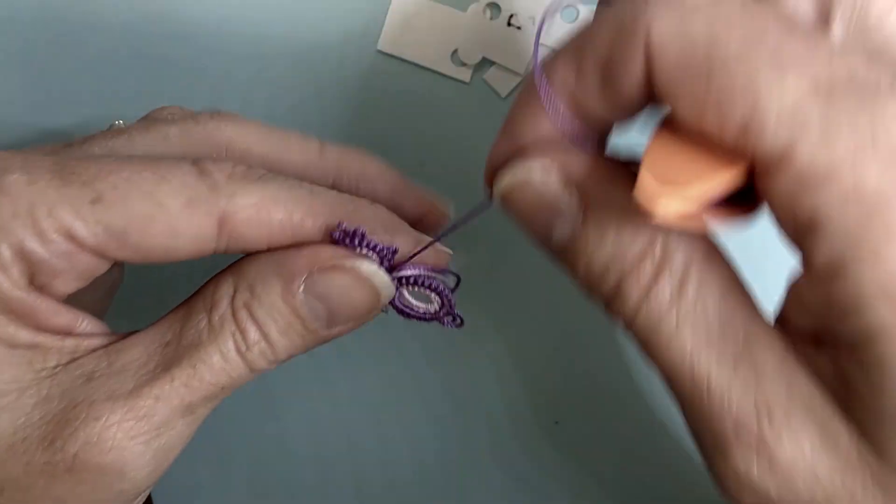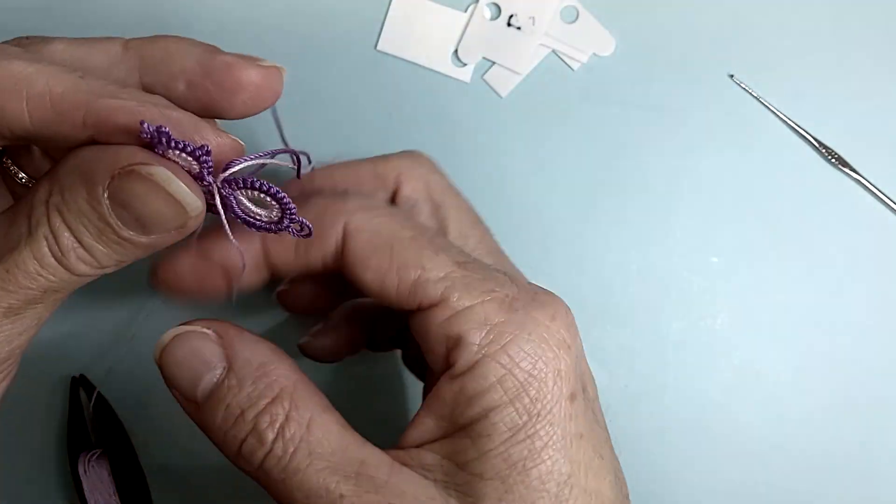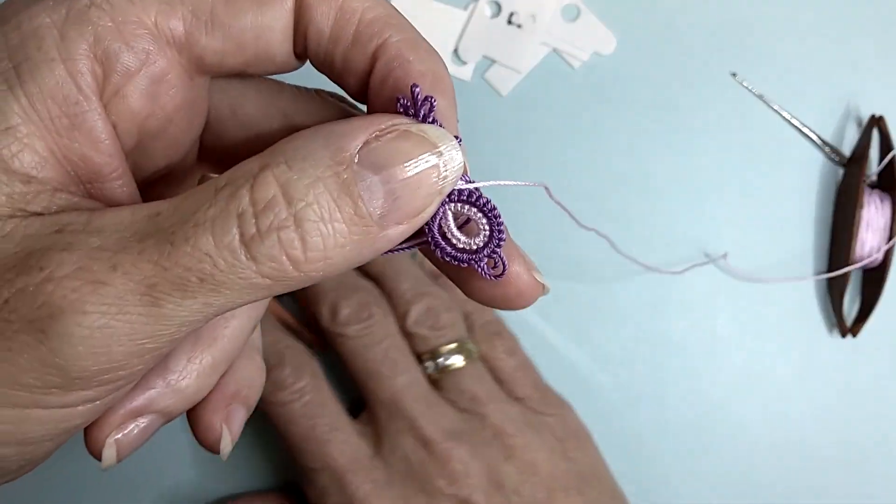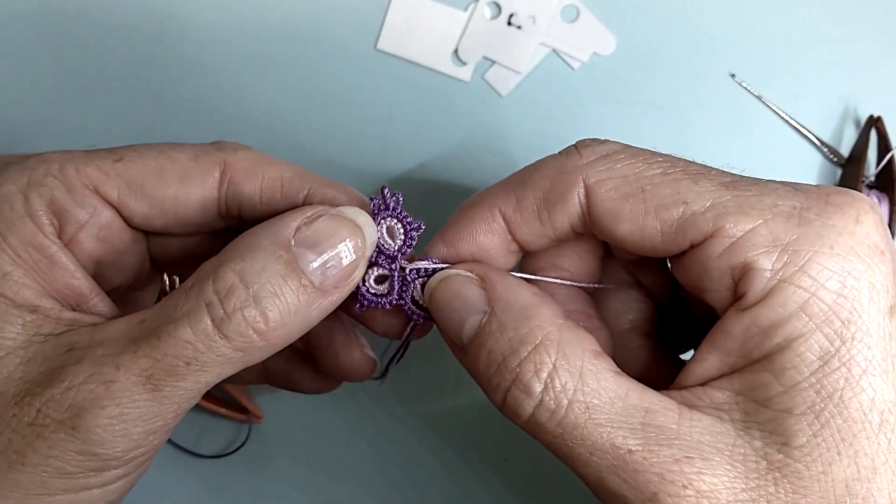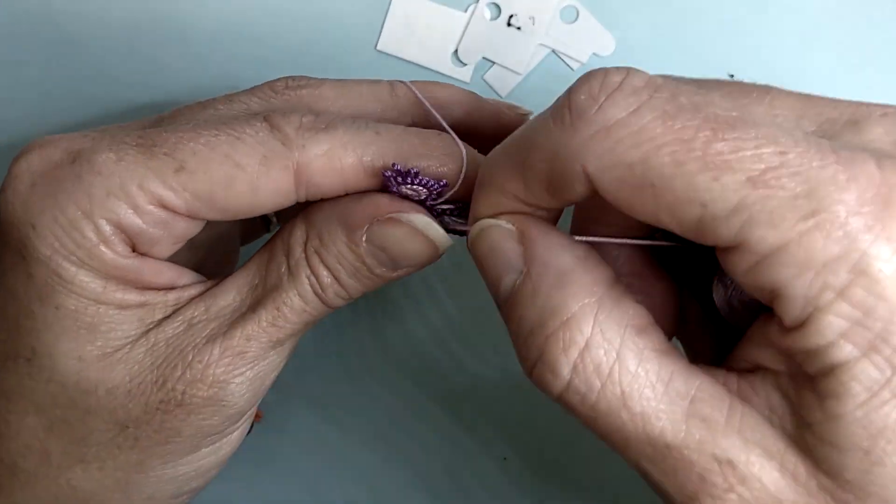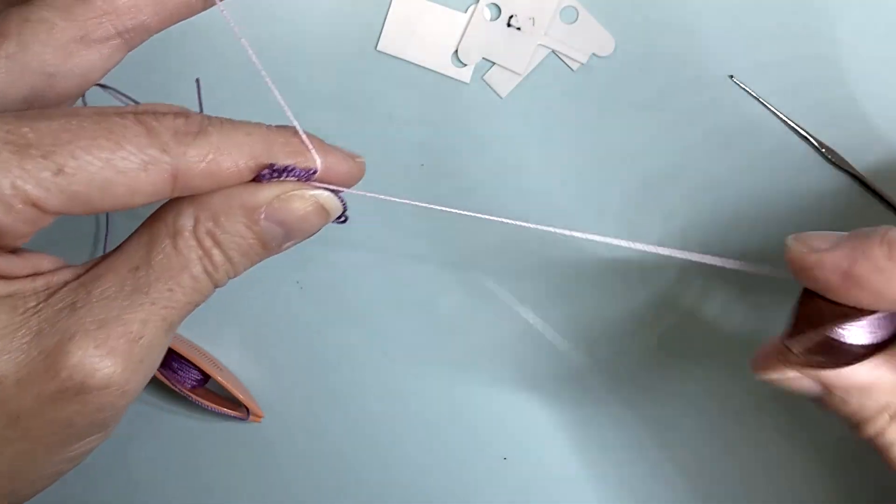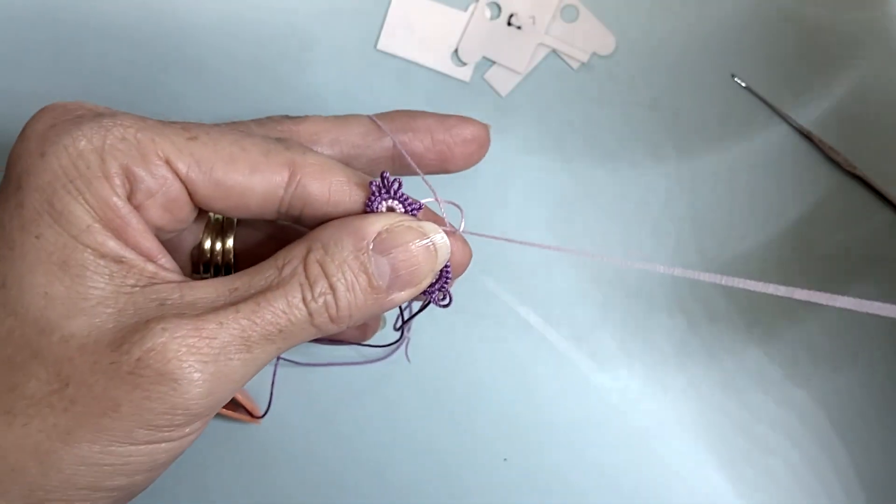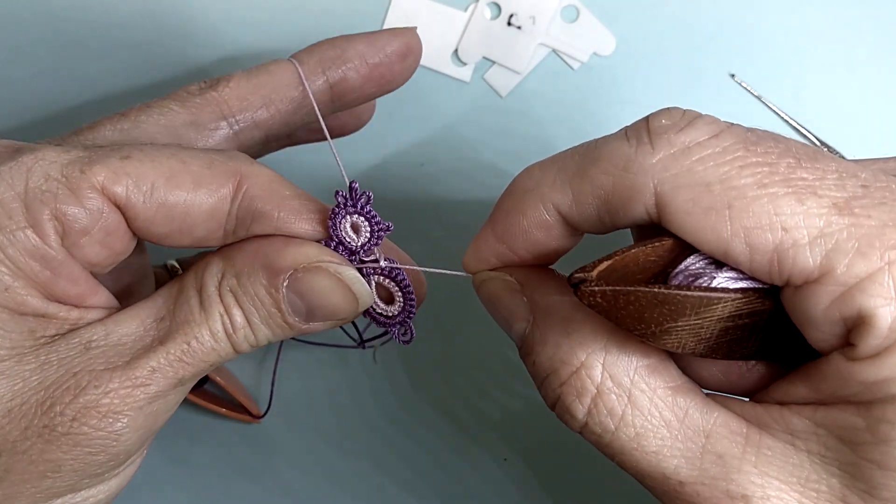Turning our work slightly to the left, swapping shuttles again. Our count is 9, adjoining picot and 9. Leave that gap between the rings.